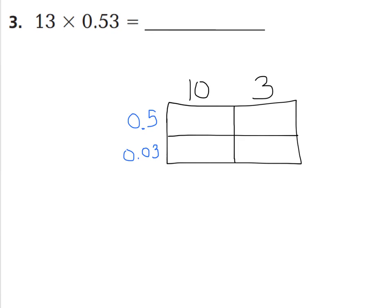Let's start with 5 tenths times 10 wholes: 10 times 5 tenths. We have one place to the decimal, so that gives a value of 5. That makes sense because 5 tenths is the same as a half, and half of 10 is 5 wholes — so the answer is reasonable.